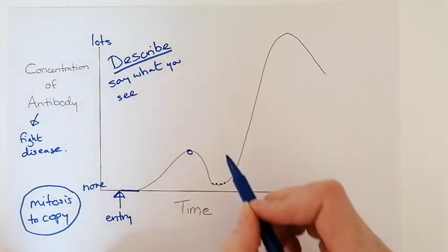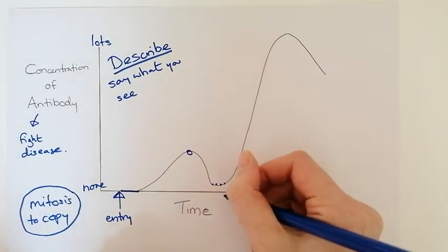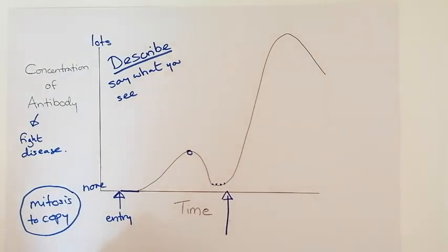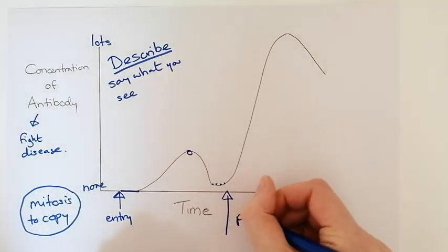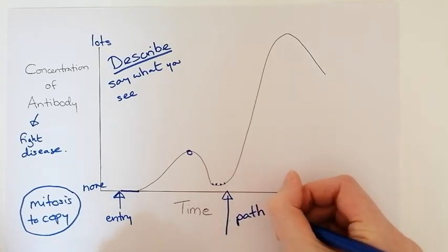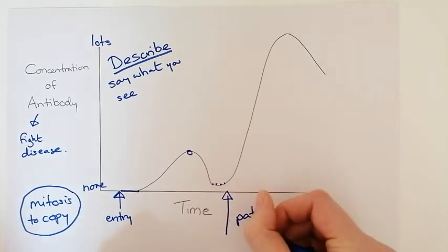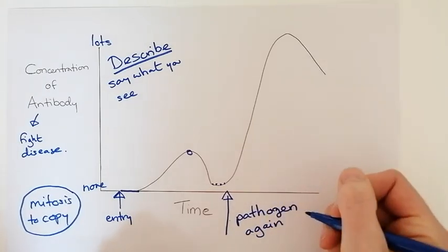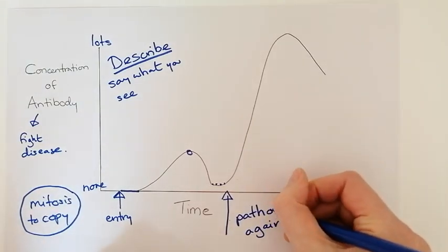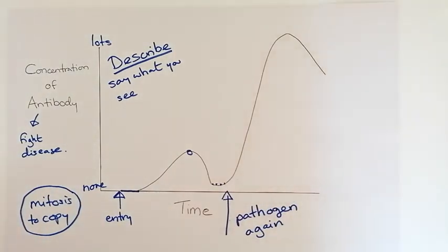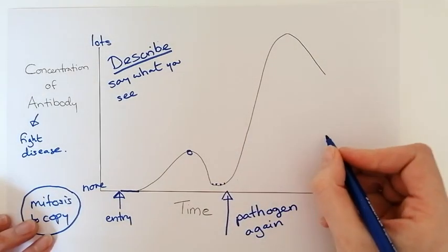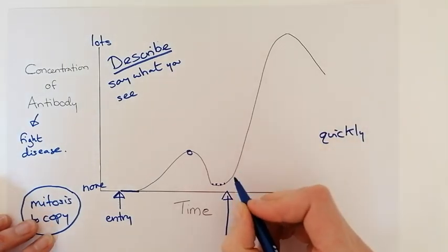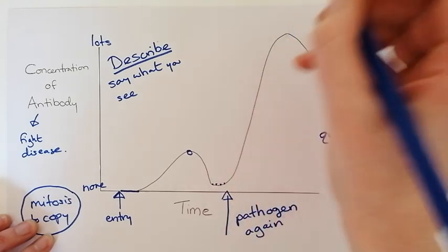Then what happens is it goes up again and this is because there's usually a second arrow on your diagram, you meet the pathogen again. So the bacteria that is trying to make you unwell comes back into the body and your white blood cells recognise it and quickly multiply again and quickly make many antibodies.